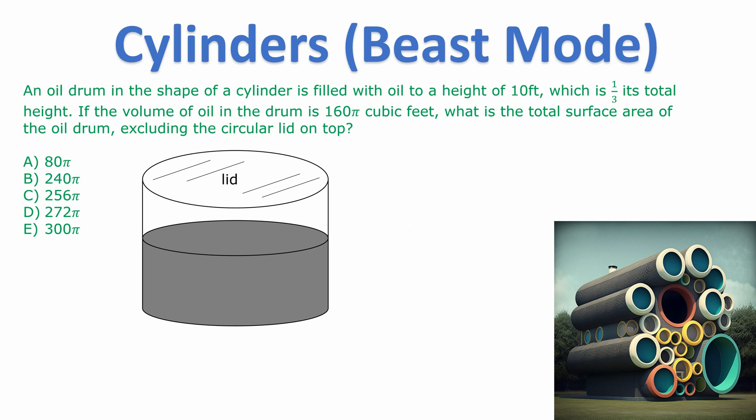If the volume of oil in the drum is 160π cubic feet, what is the total surface area of the oil drum excluding the circular lid on top? So we're combining volume with surface area and this time we don't want that lid on top.